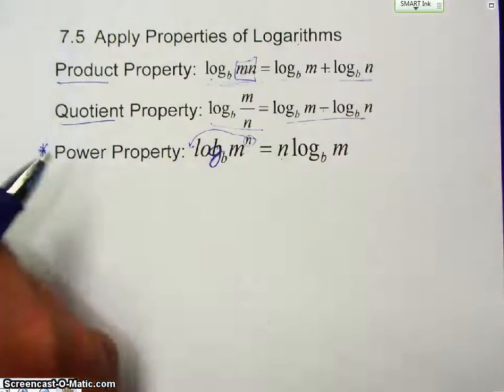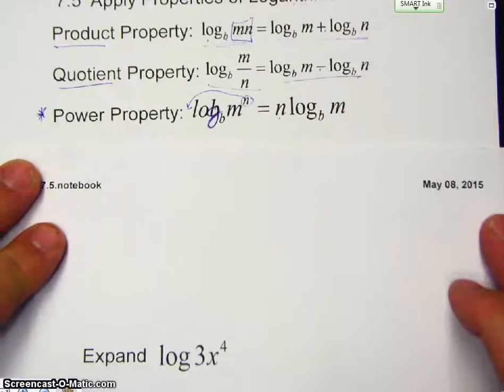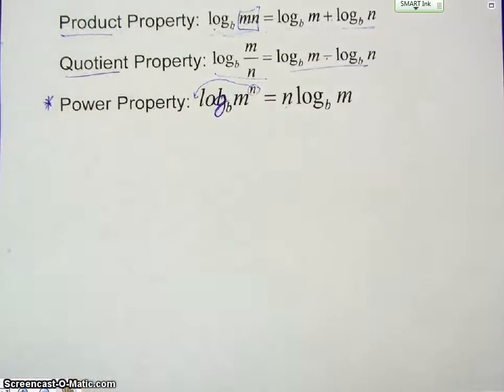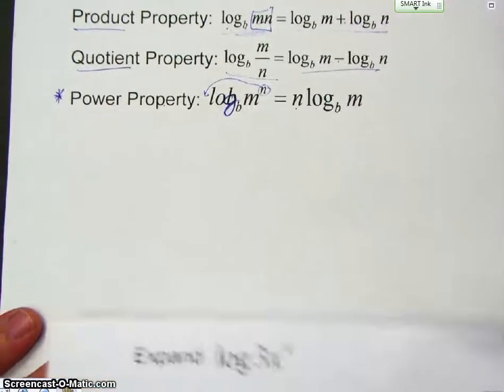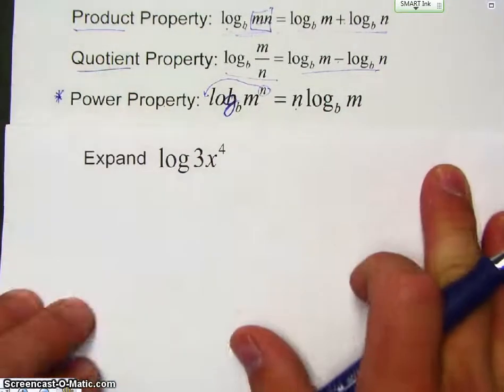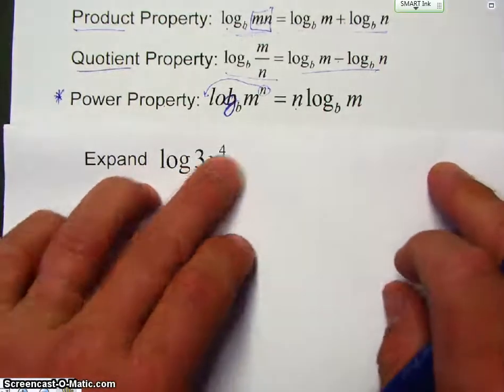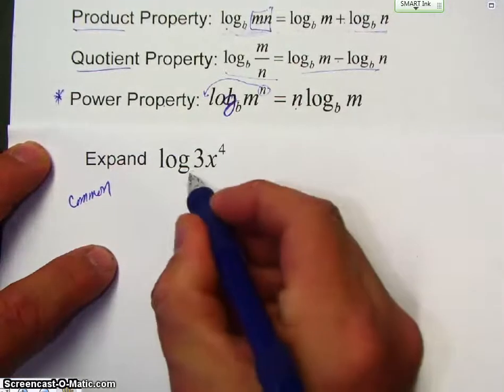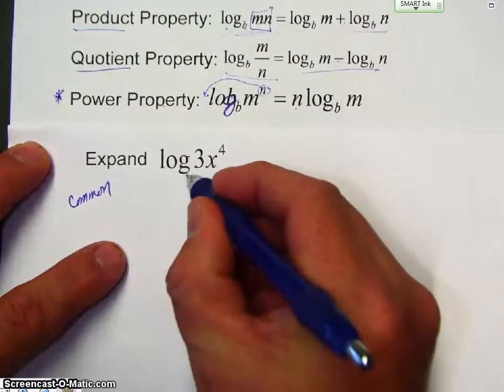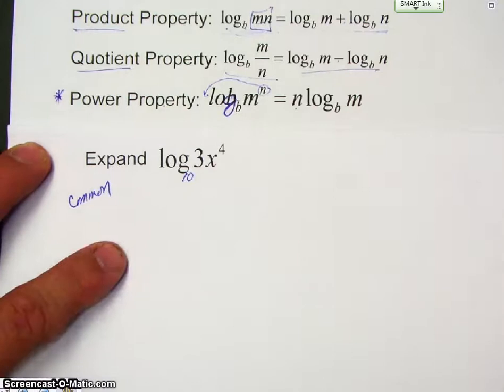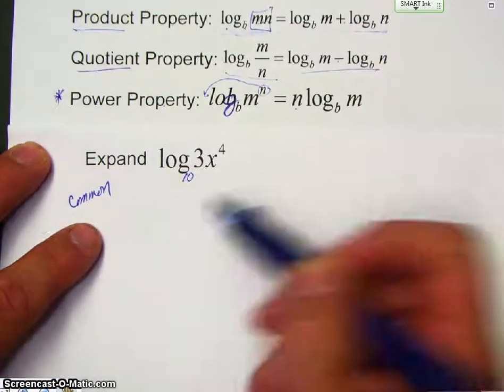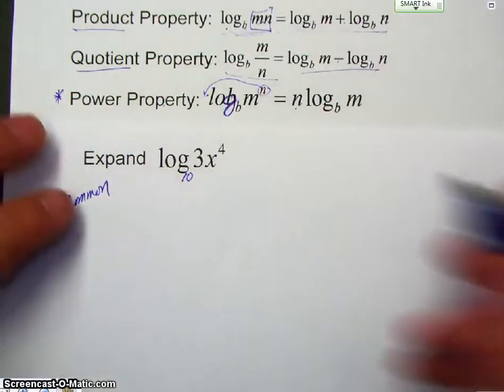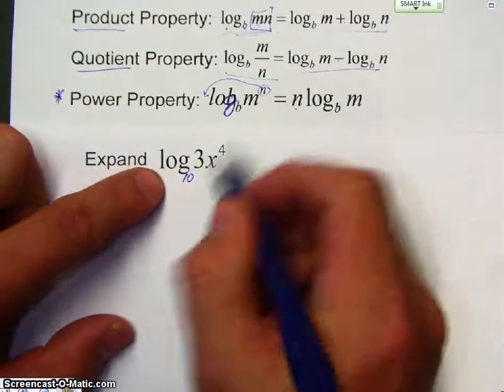All right, so the first example. Let me see if I can do this better. Keep the three properties here. I want to expand log of 3X to the 4th. Now, this is called a common logarithm. The reason why is because there's nothing here. So, that means this is actually base 10.